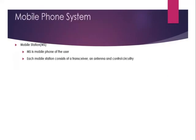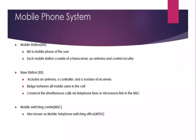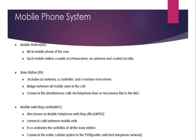The mobile station consists of a transceiver, an antenna, and control circuitry. The base station includes an antenna, a controller, and a number of receivers. It is a bridge between all mobile users in the cell, and connects simultaneous calls via telephone lines or microwave links to the MSC. The mobile switching center, also known as mobile telephone switching office, connects calls between mobile units, coordinates activities of all base stations, and connects the entire cellular system to the PSTN. PSTN consists of telephone lines, fiber optic cable, and microwave transmission links, and its main objective is to transmit human voice in a recognizable form.